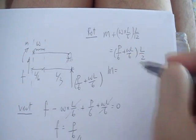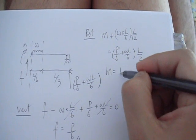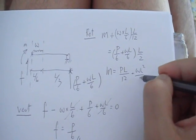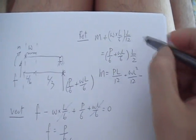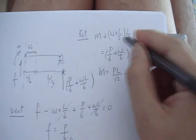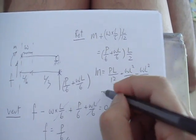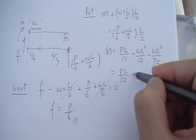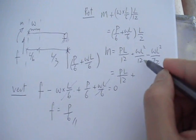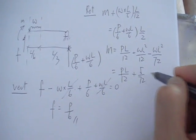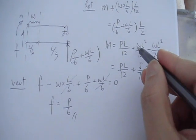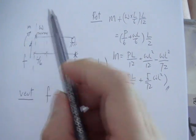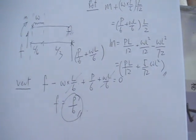That will give you the moment, which is PL over 12 plus wL squared over 12 minus wL squared over 72. If you simplify a little bit, that will give you PL over 12 plus 5 over 72. So that's the moment at the center of your beam, and the shear force is there.